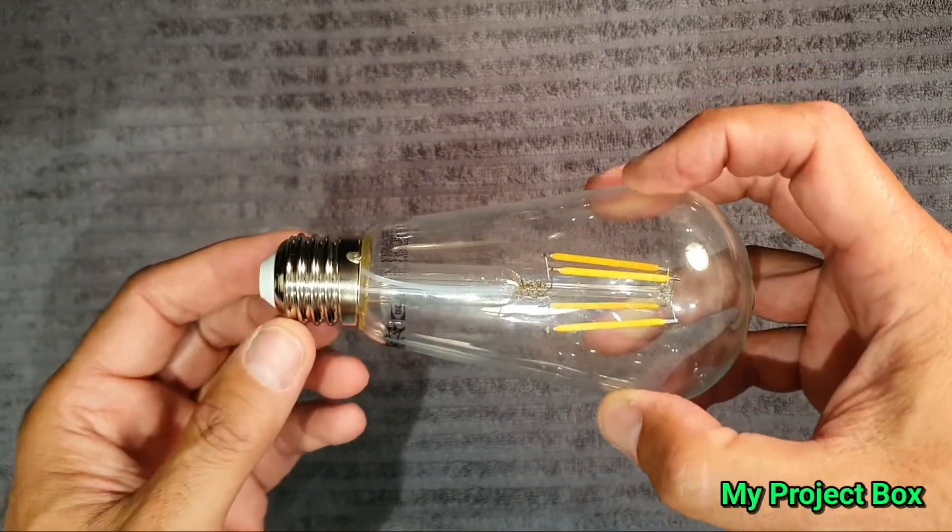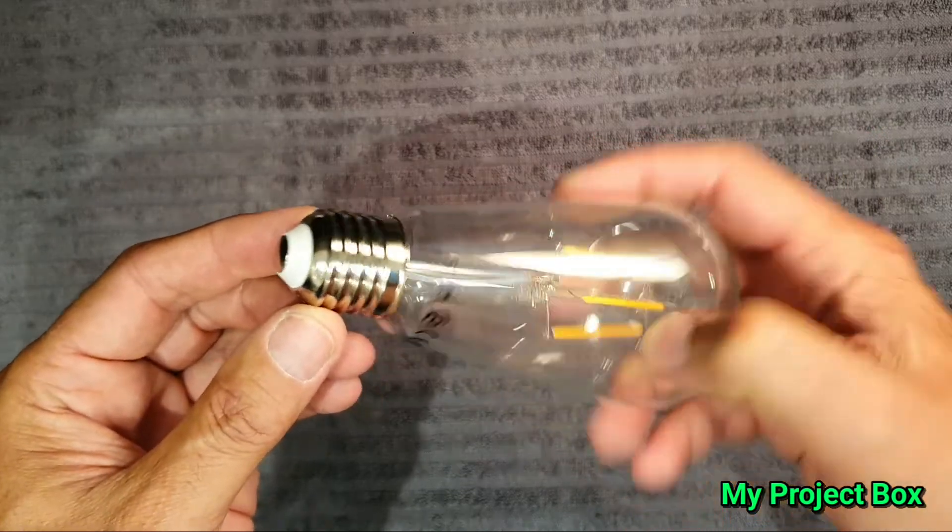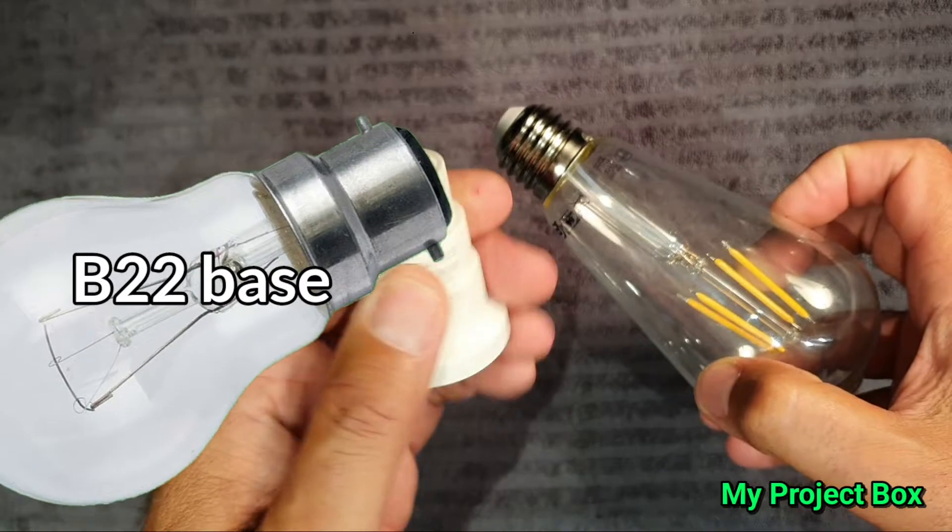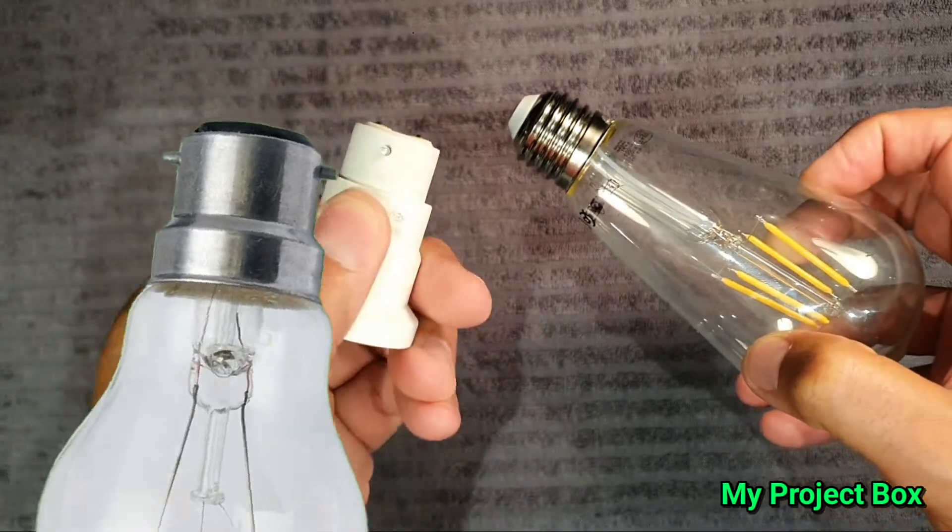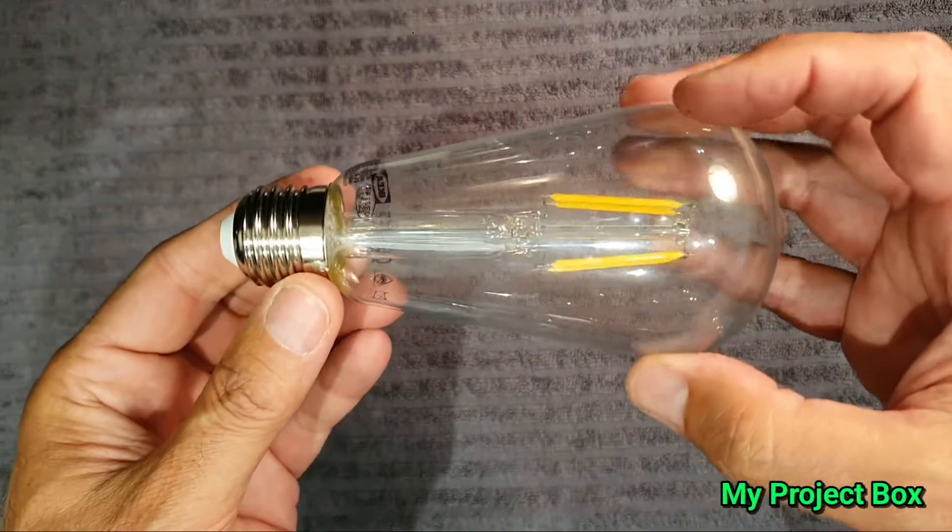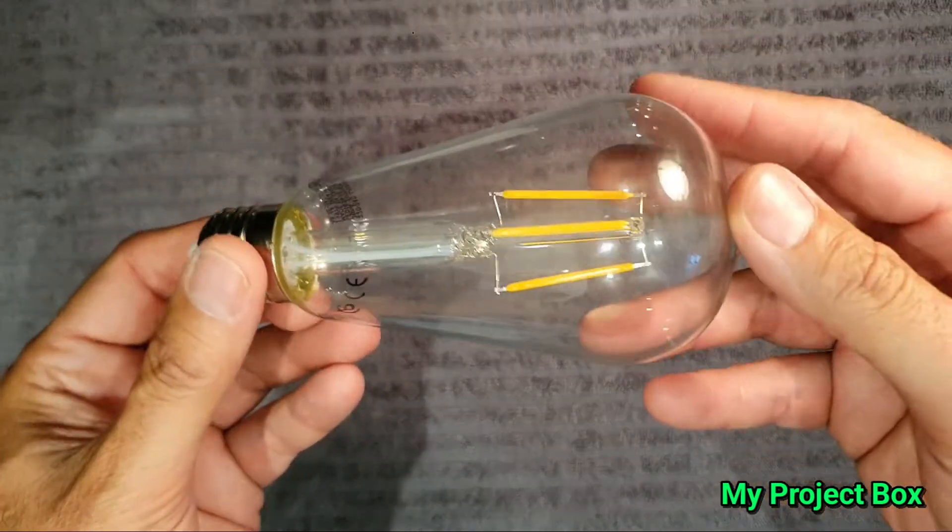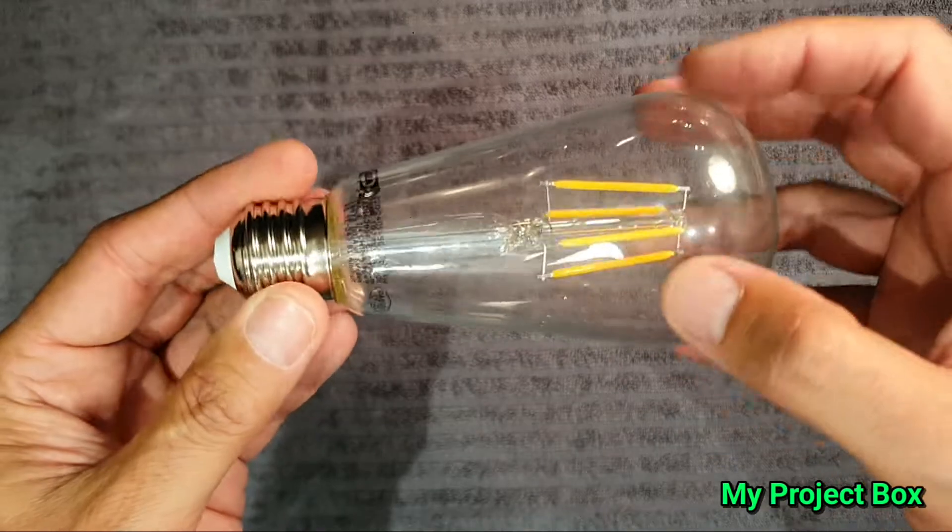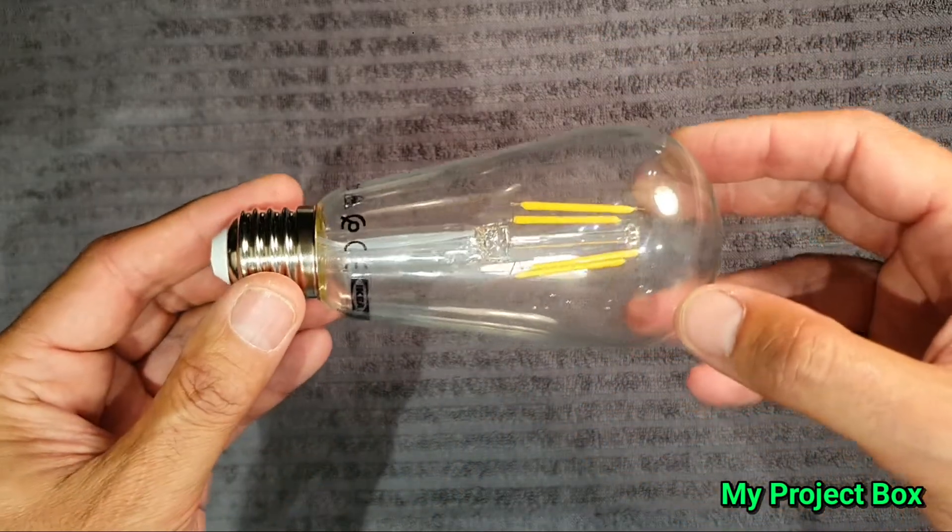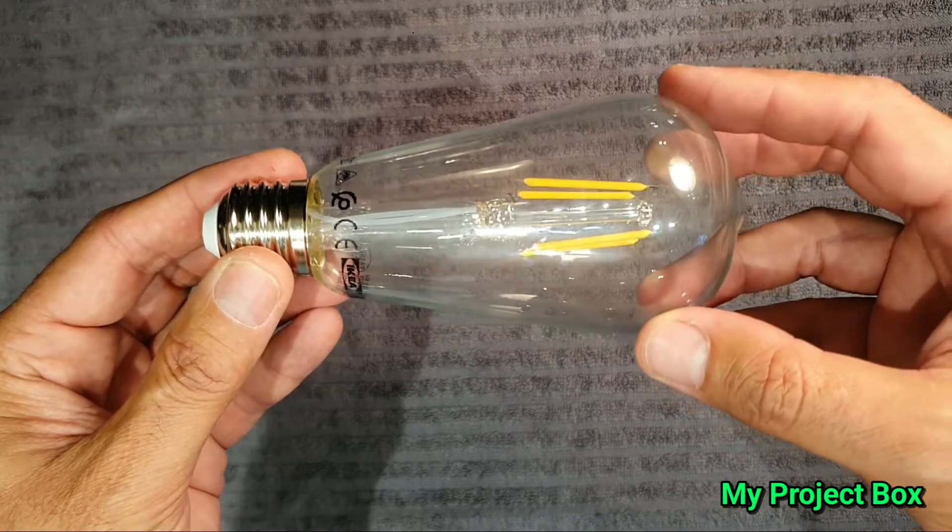It's actually something called bayonet fitting, which is kind of you push it in and give it a turn and it clicks in place. But this is one of these decorative style LED light bulbs, one of the filament decorative style ones like a vintage looking one, and they are becoming more common here in the UK.